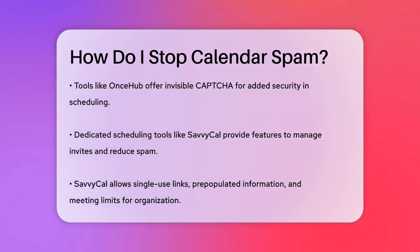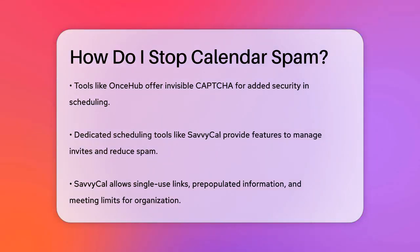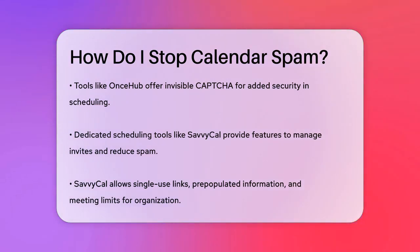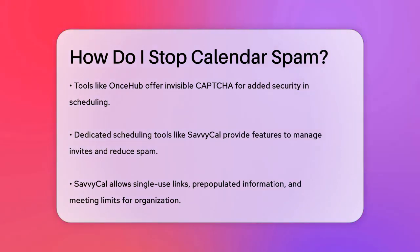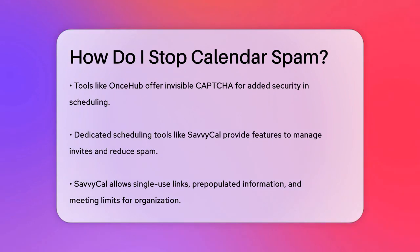Using dedicated scheduling tools can also help. For instance, SavvyCal offers features like single-use links, pre-populated recipient information, time blocks, and meeting limits. These tools can help keep your calendar organized and free from spam. You can even require approval before events are confirmed.